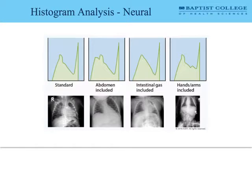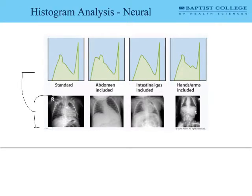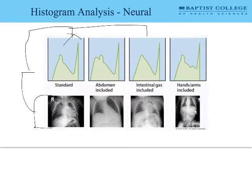Neural histogram analysis is more complex. The data extracted from the plate is compared to two or more predefined histograms, and the image is created after matching image data to one of those predefined histograms. This involves some artificial intelligence, which is why it's called neural histogram analysis. When an image is fed in, the computer searches it against stored references and selects the best match. The computer stores appropriate histograms for each body part, compares minimum and maximum values in the image, and the process of matching captured image values to standardized values is called automatic rescaling.